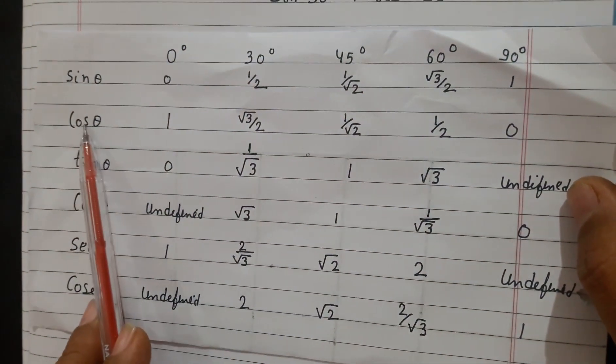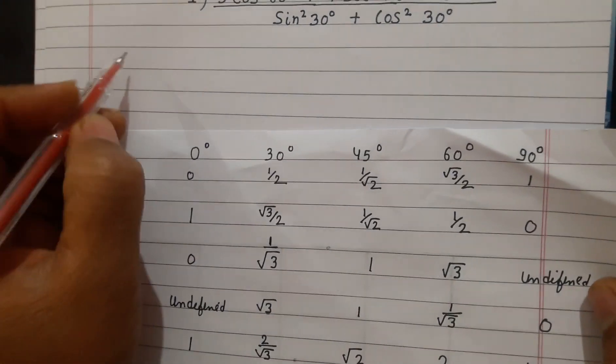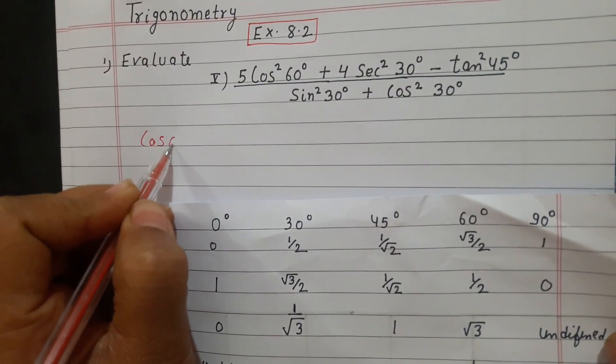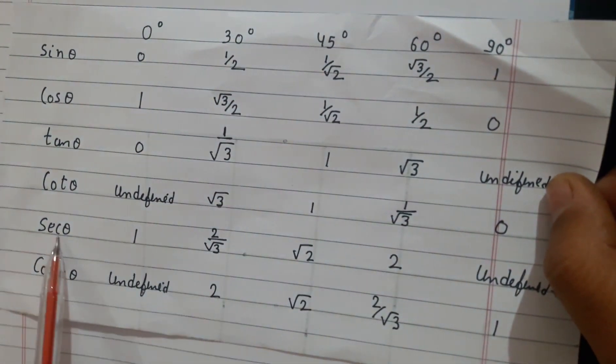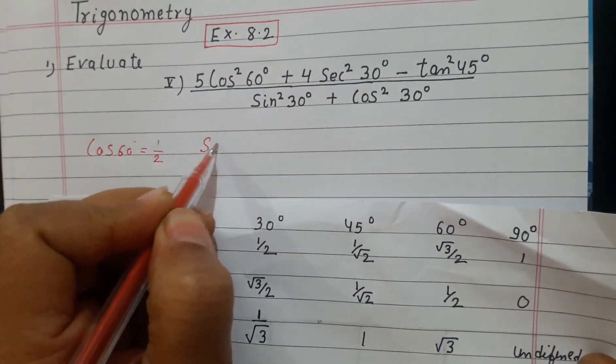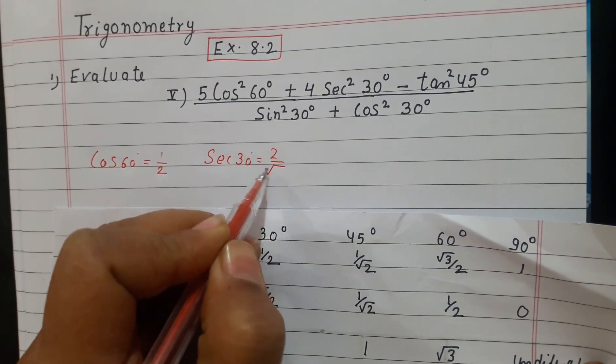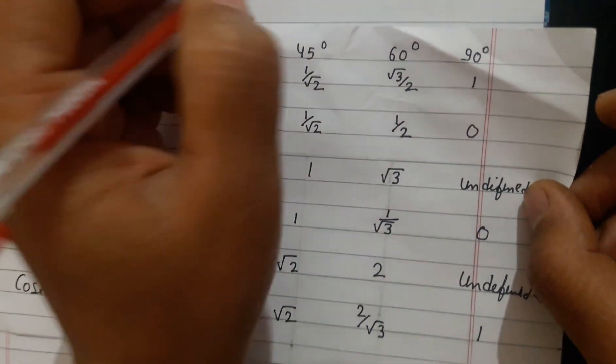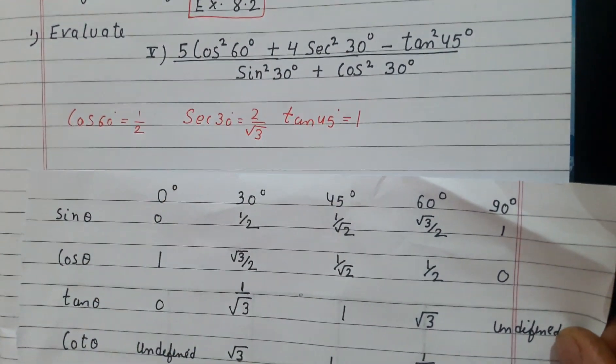I have made the same table. cos 60° is 1 by 2. Next value, sec 30° is 2 by root 3. Next, tan 45° is 1.